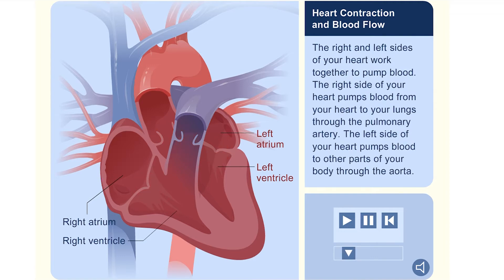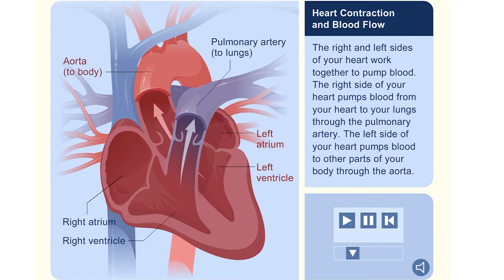The right and left sides of your heart work together to pump blood. The right side of your heart pumps blood from your heart to your lungs through the pulmonary artery. The left side of your heart pumps blood to other parts of your body through the aorta.